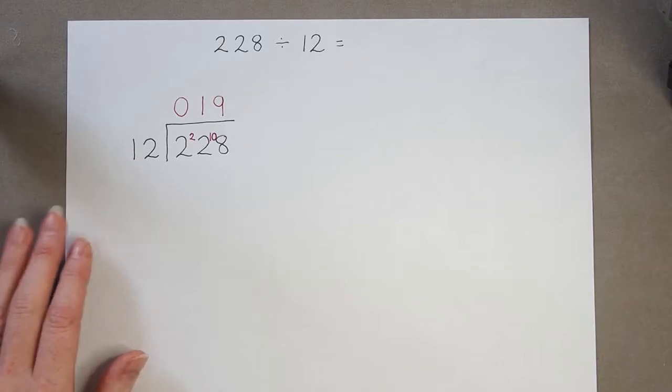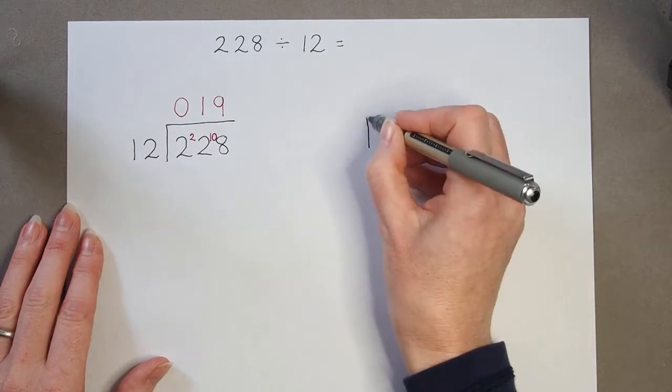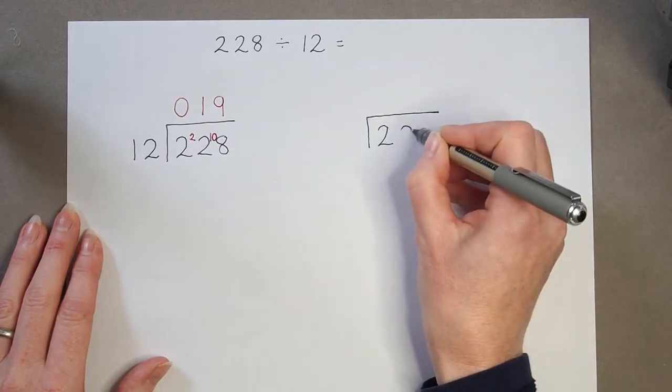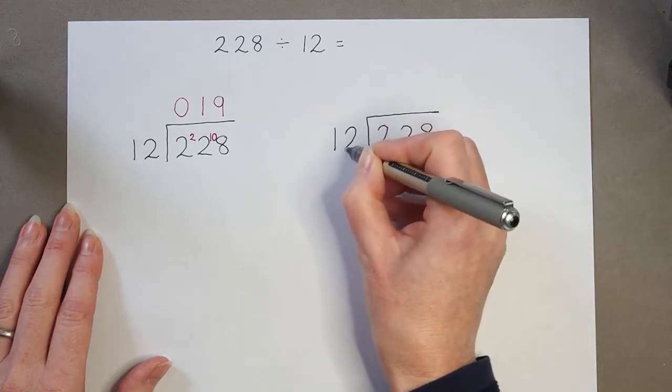Now, using the long division method, we start in exactly the same way. So we have 228 divided by 12.